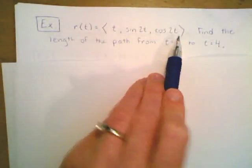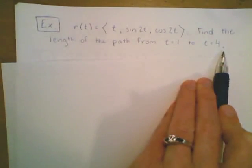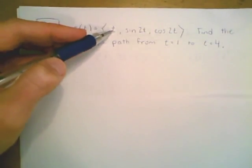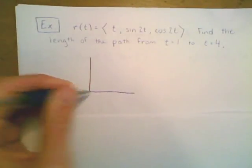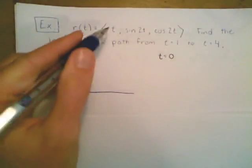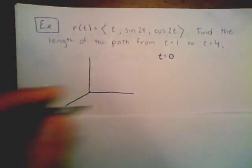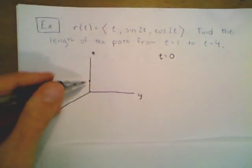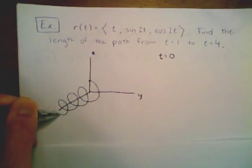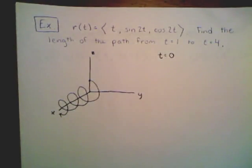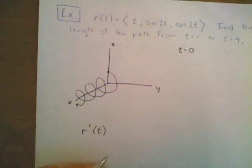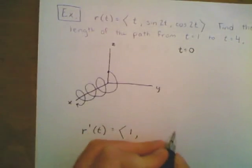Let's say r of t is given by the function t, sine of 2t, cosine of 2t, and I want to find the length of the path from t equals 1 to t equals 4. Notice this function is a modified helix, progressing outward in a linear path along the x direction. When t equals 0, we start at the vector (0, 0, 1), and it loops around the x-axis looking like a helix.